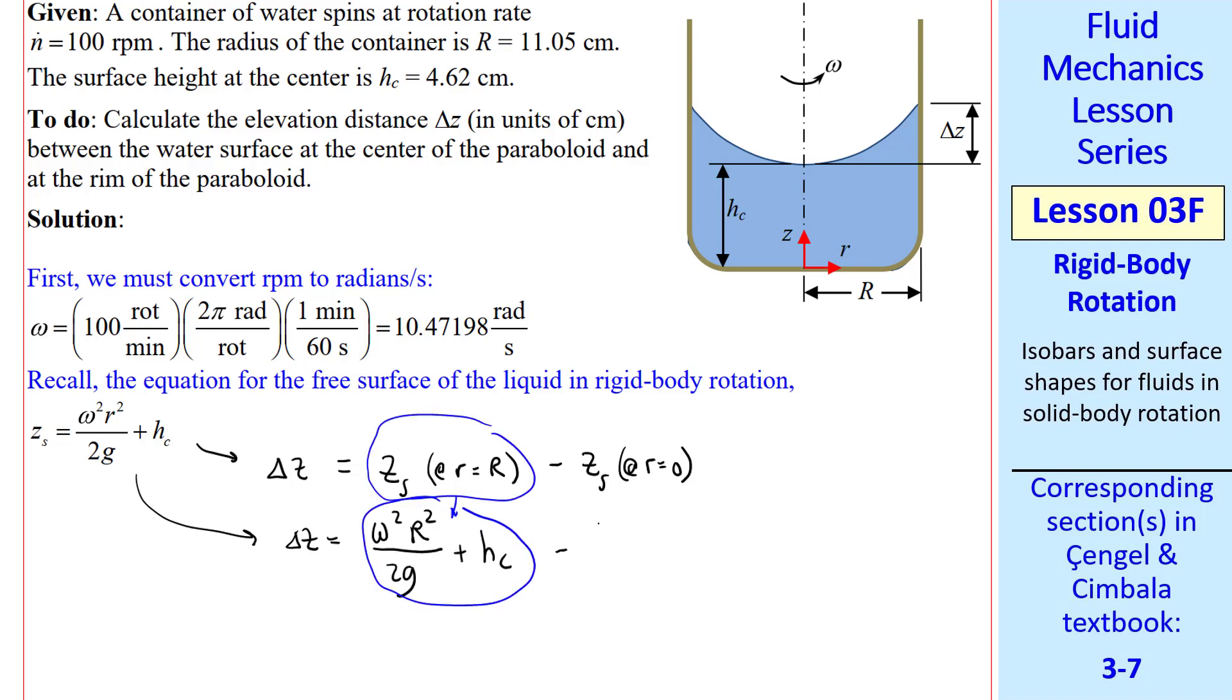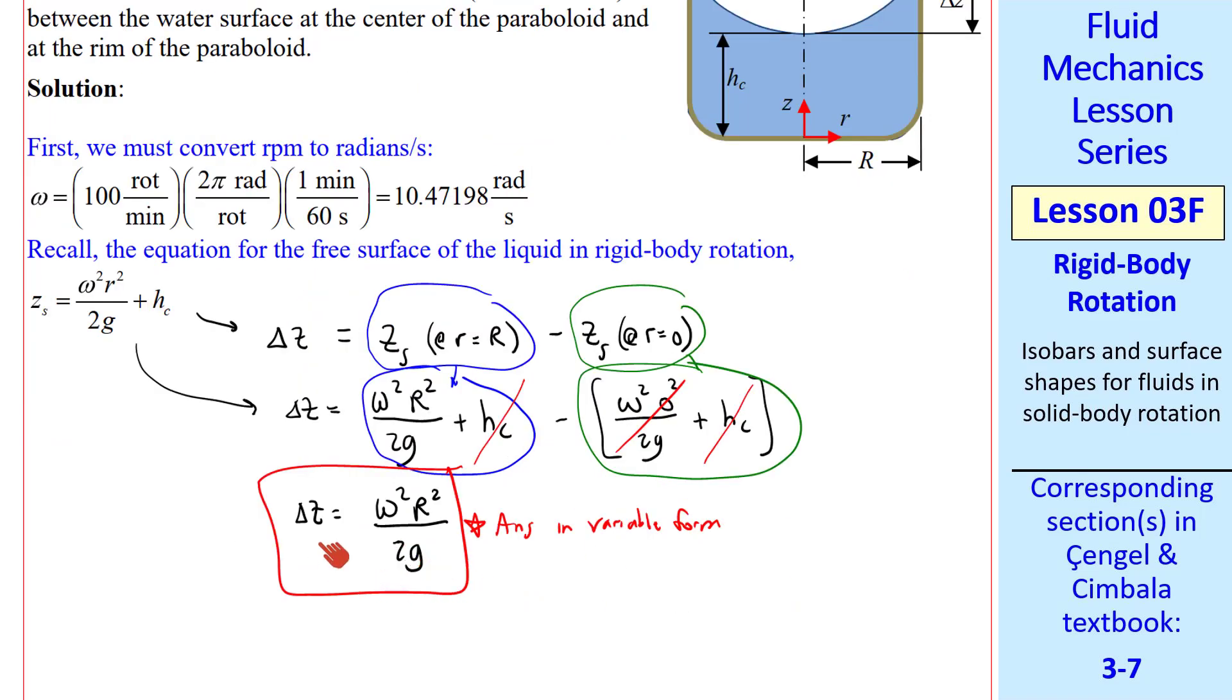That's the first term, minus omega squared r squared over 2g plus hz, but R equals 0 here. So this term goes away, and this is the second term. The hc's also cancel out. So our answer in variable form is omega squared r squared over 2g.